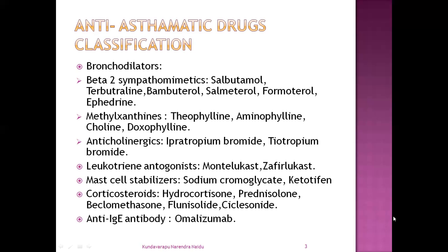The next class of drugs used as anti-asthmatic drugs are leukotriene antagonists, which act against the leukotriene receptor. They are montelukast and zafirlukast. And the next one is mast cell stabilizers — they are sodium cromoglycate and ketotifen.